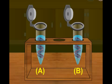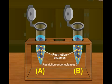The DNA is cut with the help of restriction enzymes like restriction endonucleases, which generate various DNA fragments of different sizes.